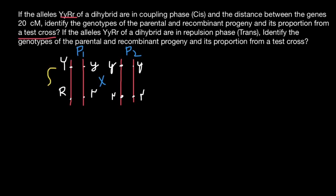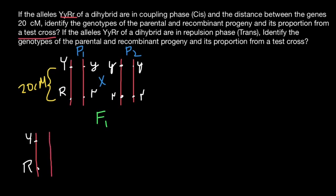We also know that the distance between gene Y and R is 20 centimorgans. In the F1 progeny, from parent one, if no crossing over happens, progeny will inherit the chromosome with two dominant alleles, dominant Y and dominant R. From parent two, no matter which chromosome is inherited, it will always be recessive y and recessive r alleles on the same chromosome.